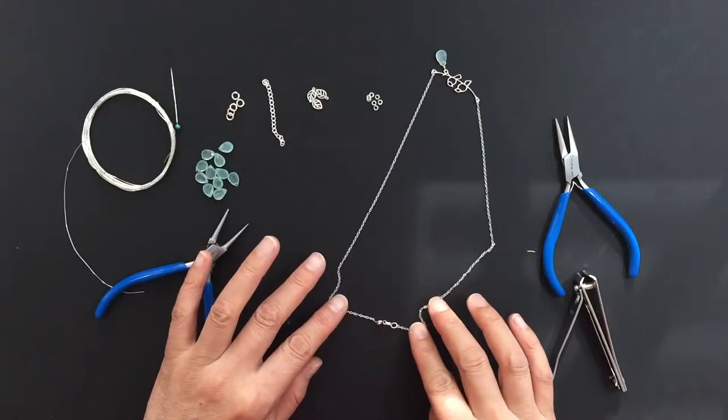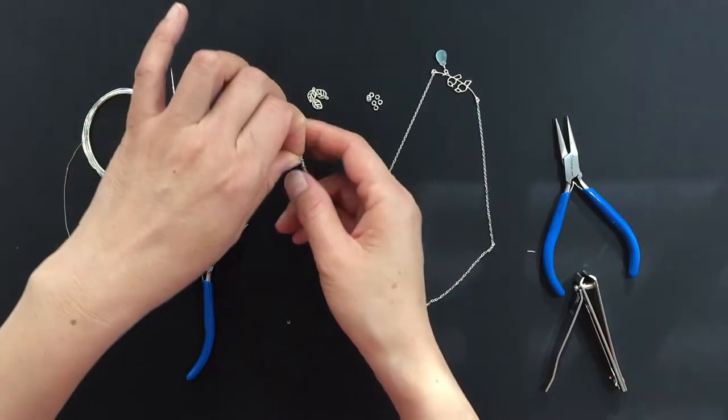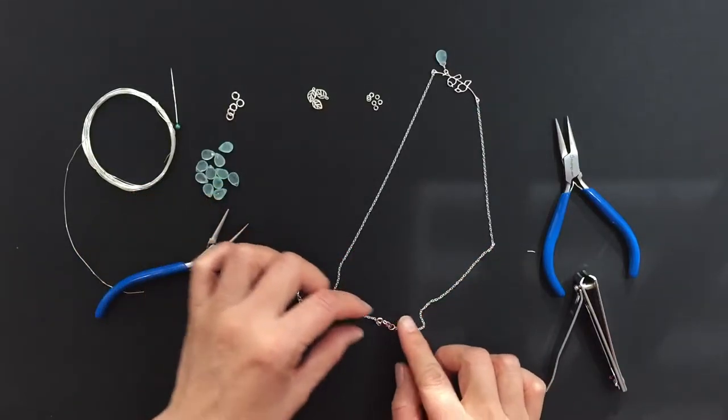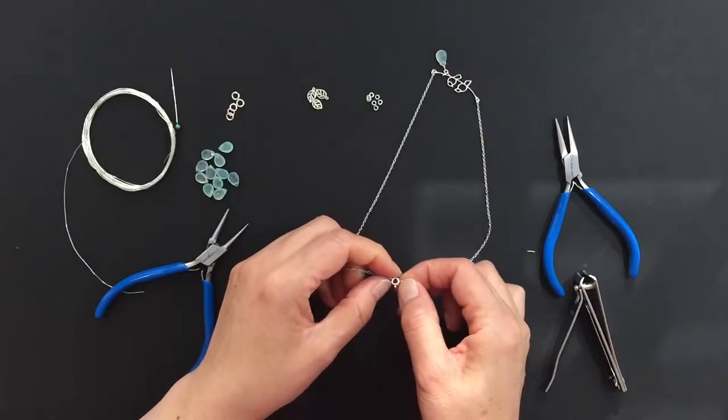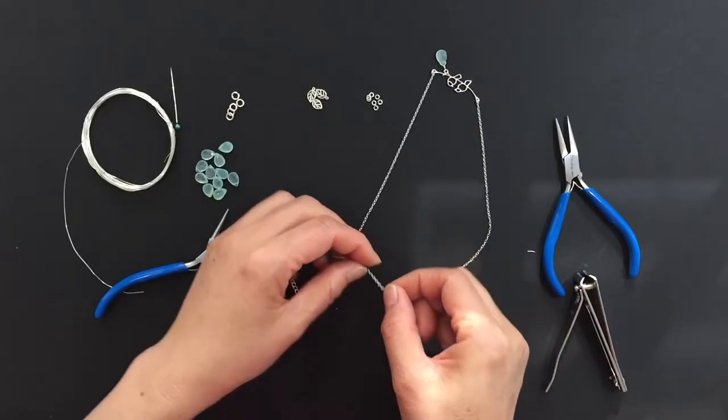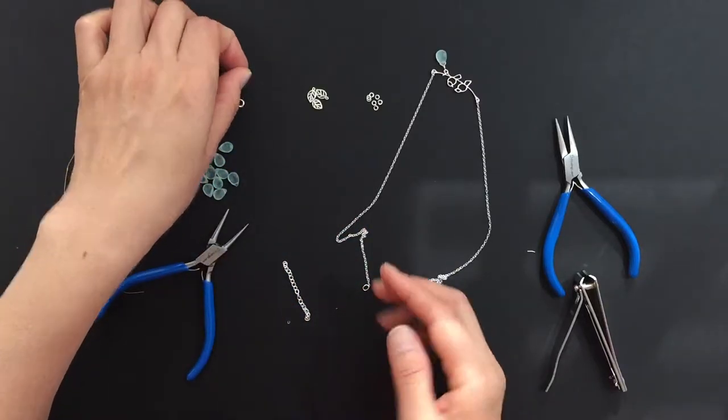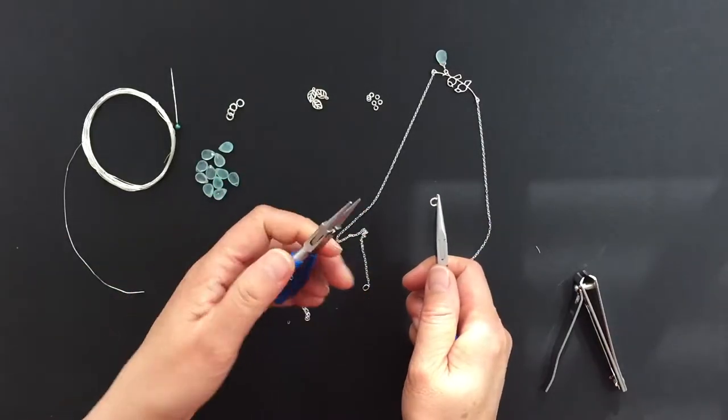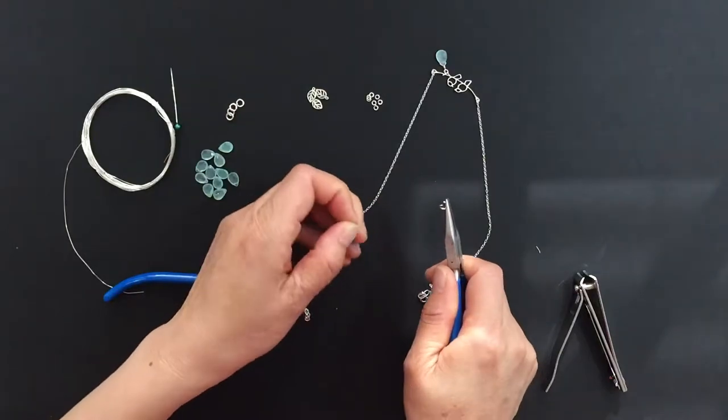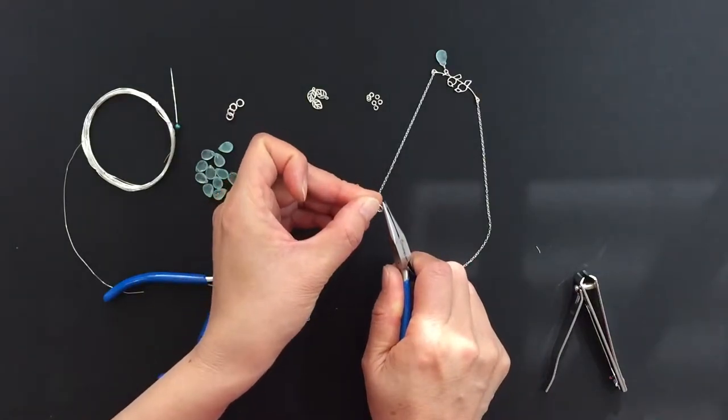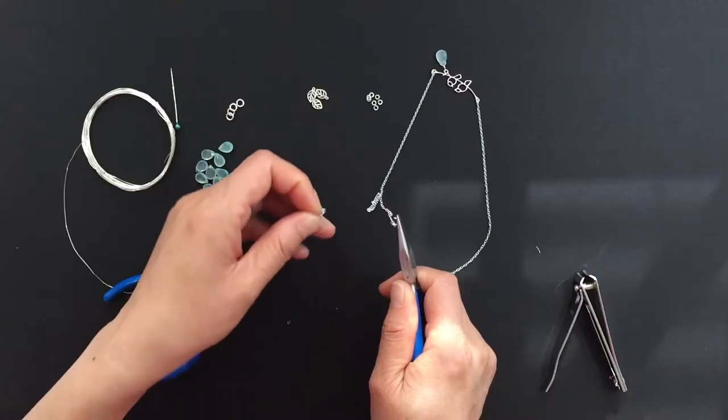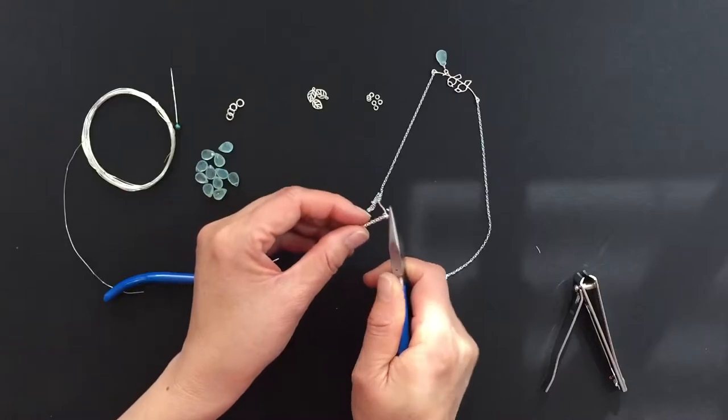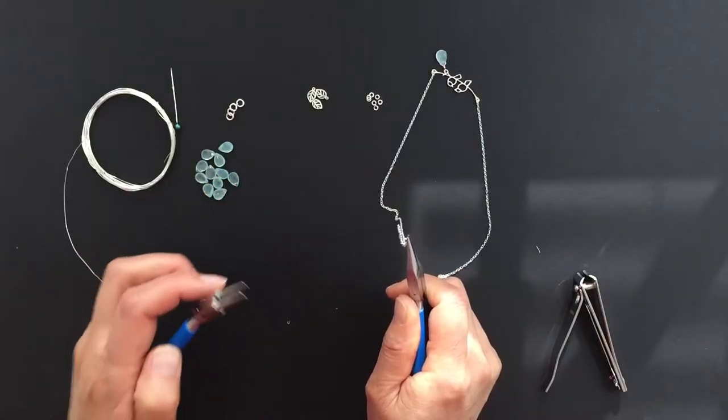To make your necklace adjustable, we're going to add an extender. For this, we'll use 2 inches of a 3x4mm cable oval chain. Open the clasp on the Italian sterling silver chain and one end of the extender. Firmly close your jump ring.